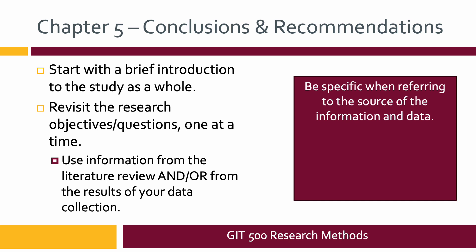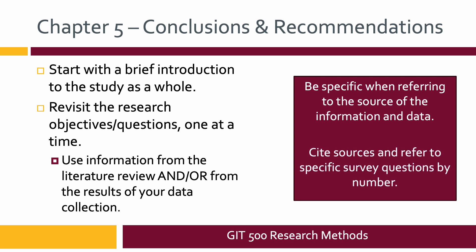To address the objectives or answer the questions, use information from both your literature review that applies to them and the results of your data collection. Be very specific when referring to the source of the information and data. Cite things — you still need to cite things. If you pull information from your literature review, bring the citation with it. Refer to specific survey questions by writing something like 'as shown in question seven in the survey, which was...' — that makes it much more clear and saves readers from having to search back through your paper.